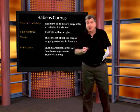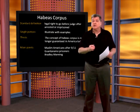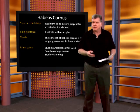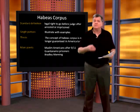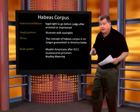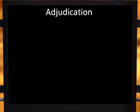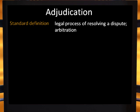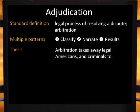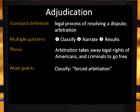You can also combine these patterns into a single essay, mixing and matching, in order to develop the main point in the way that best makes that point for you. Term: adjudication. Standard definition: legal process of resolving a dispute — arbitration. Thesis: when it comes to criminal acts, adjudication short-circuits the legal rights of Americans. In our first paragraph, we could use the classify pattern and define forced arbitration as the specific type of adjudication we are writing about.